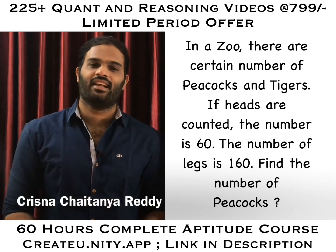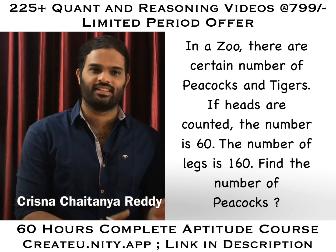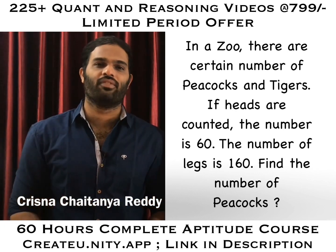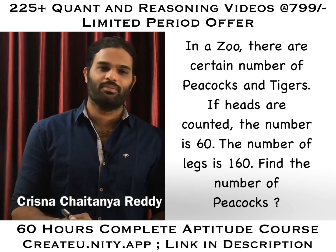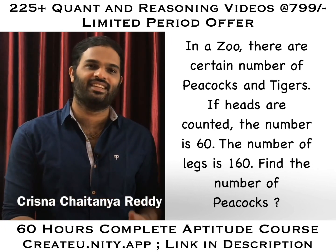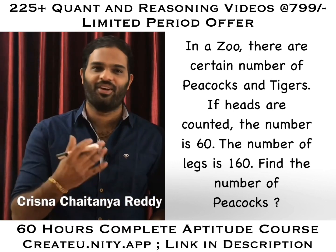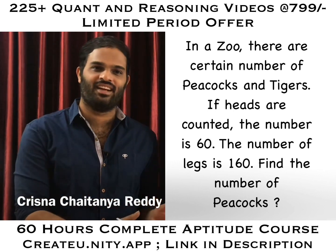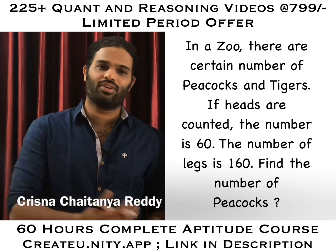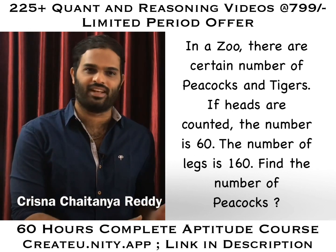He very clearly said there are some peacocks and tigers. If heads are counted, it is 60. Legs are counted, it is 160. The most important part here is you have to know how many heads a peacock has and how many heads a tiger has. We all know peacock has one head and tiger also has one head. But he has given the count of legs — peacock has two legs, whereas tiger has four legs.